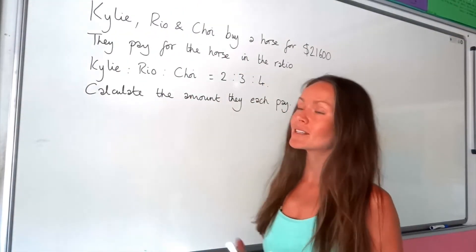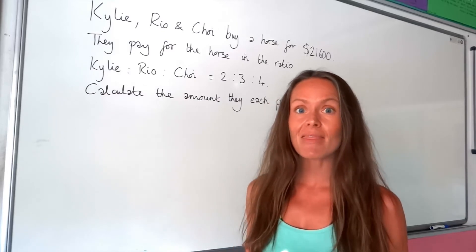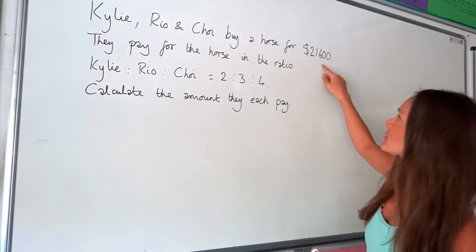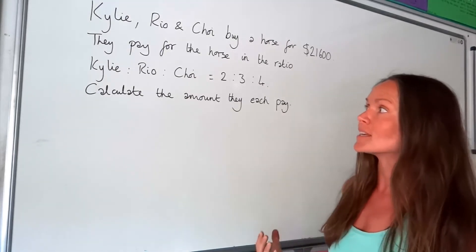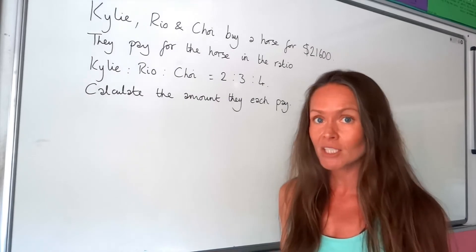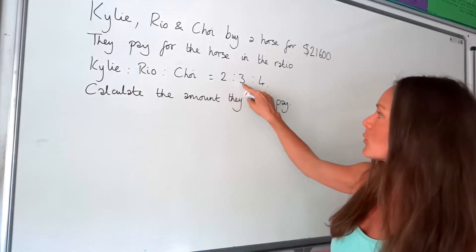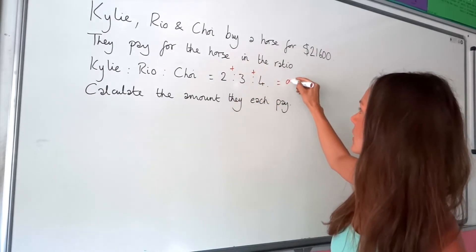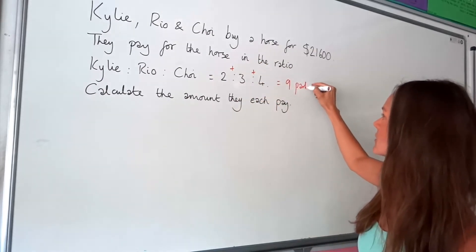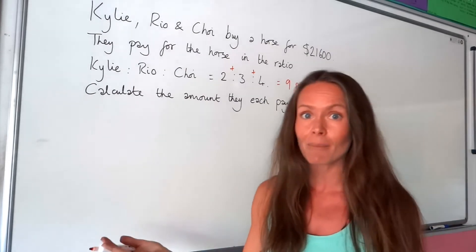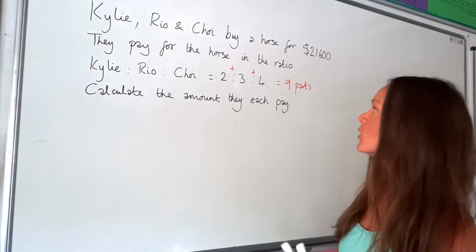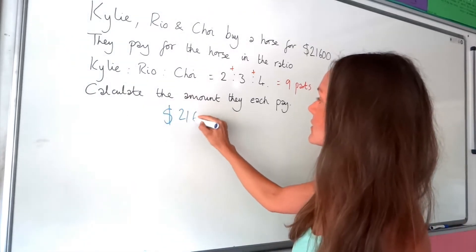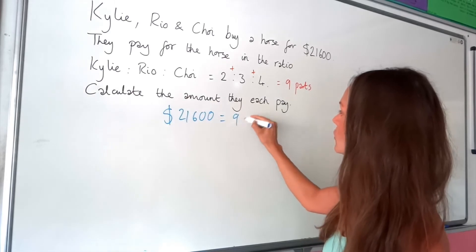This exam question is very similar to the first one, in that we're told the total amount of money they pay for the horse: $21,600. So we need to work out the total amount of parts in the ratio. We've got two, three, and four parts in the ratio, so we add those numbers together to get the total. That gives us nine parts altogether. So $21,600 is equal to nine parts.